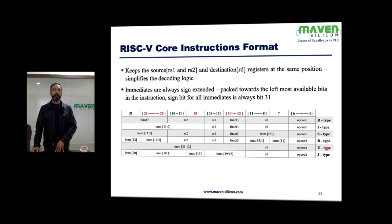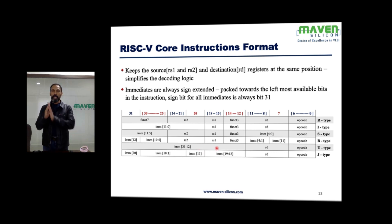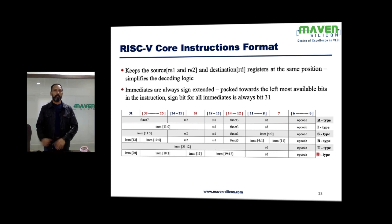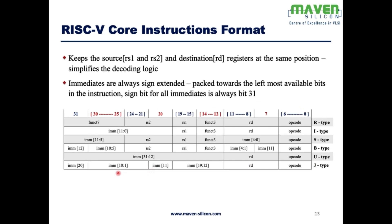U-type, upper immediate: whatever constant is defined by the immediate value, that constant is stored in the destination register. Basically, we load the upper immediate, which means we keep this constant at the MSB and append zeros at the LSB. We will look at this in more detail later. The last type is J-type, jump type, which jumps to a particular location where the address is defined by the immediate value.